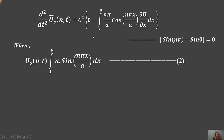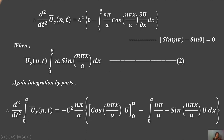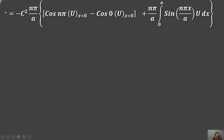We define Uˢ(n, t) = ∫₀ᵃ u·sin(nπx/a) dx. Applying integration by parts again: d²/dt²·Uˢ(n,t) = −c²·(nπ/a)·[cos(nπx/a)·u]₀ᵃ + c²·(nπ/a)·∫₀ᵃ sin(nπx/a)·u dx.